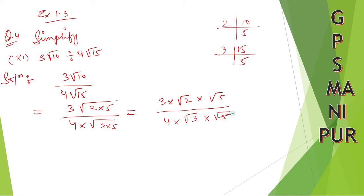Now root 5 and root 5 cancel. This got cancelled. Now we can do something here.